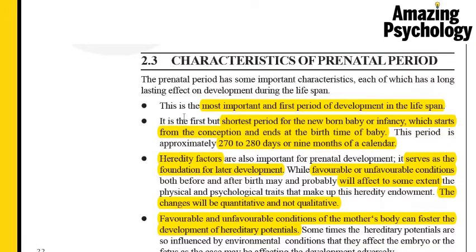Now let's look at the characteristics of prenatal development. First, it is the most important and the first period in lifespan development. It is also the shortest period when compared to all other growth periods. It starts from conception — when the sperm and egg fuse — and ends at birth. Normally this takes around 270 to 280 days, considered as nine months of a calendar.